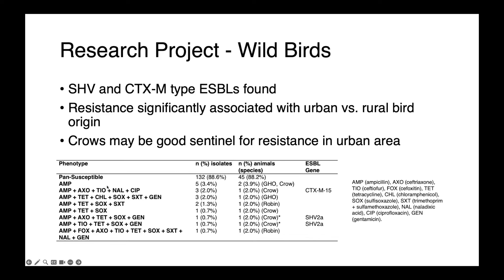Looking at the susceptibility profiles, the majority of isolates were susceptible to all drugs tested, but we had a few nasty multi-drug resistant organisms, including a CTXM-15 producer from a crow and SHV-2A producers from another crow. This study also suggested that crows are potentially a good sentinel for resistance in urban areas — they're digging through garbage cans, they're curious and mischievous, and they may give us an opportunity to subsample what's going on in the city more broadly.